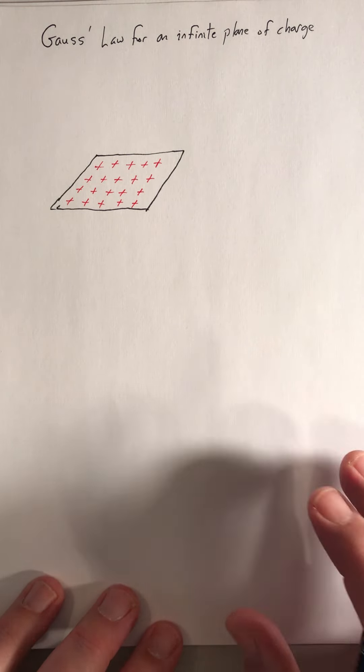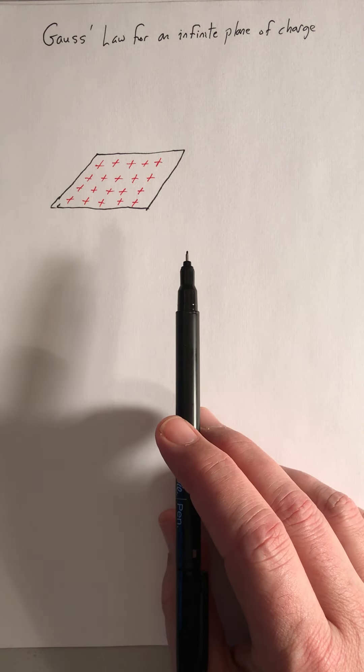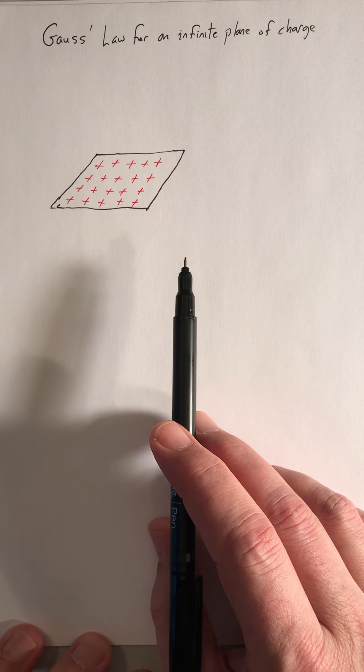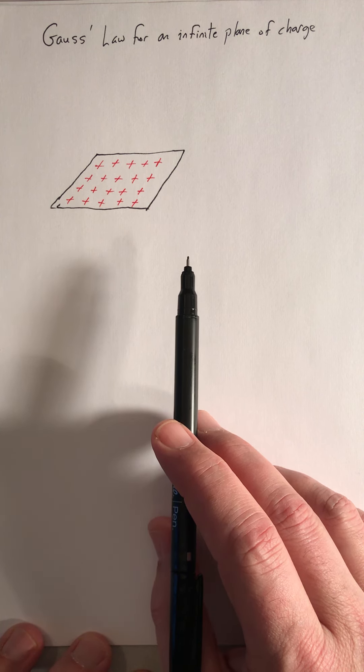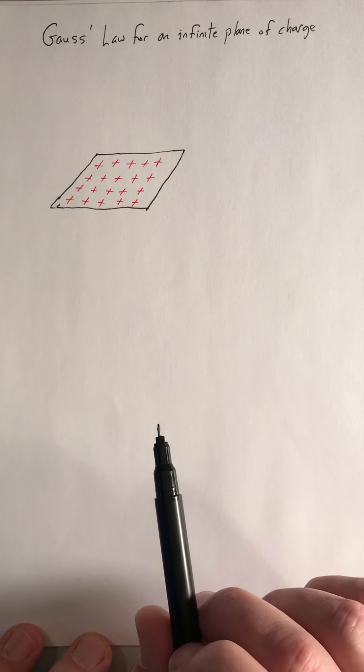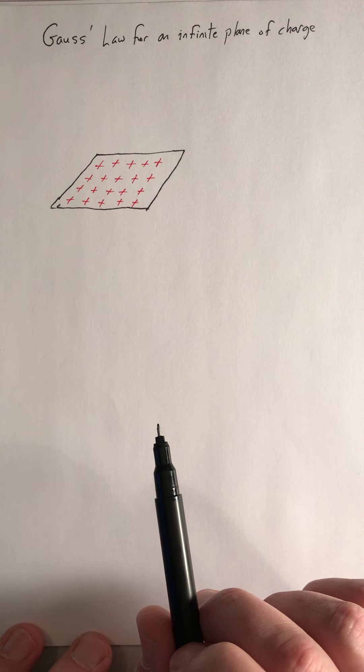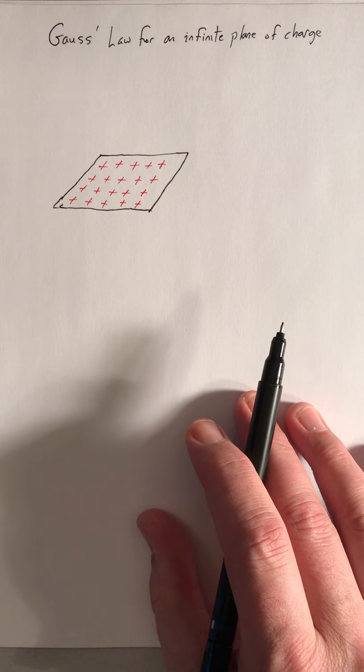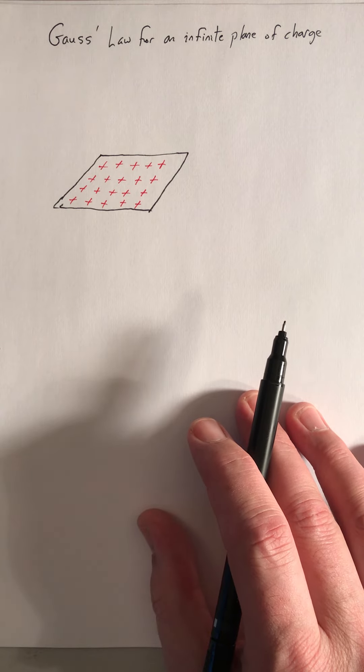And obviously there is no such thing as an infinite sheet of charge or of anything, but what is true is that if you are close to a finite sheet, you're not going to be able to tell the difference between that and the sheet is actually infinite. So this is one of those examples of thinking about a limiting case as being a useful approximation.